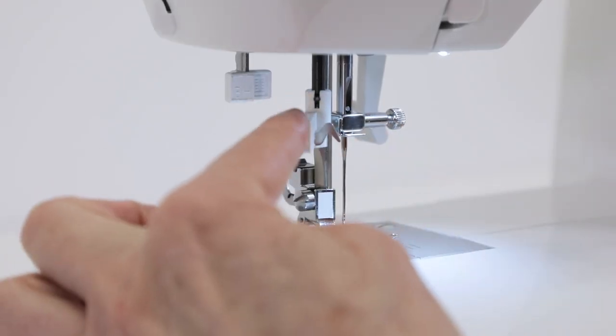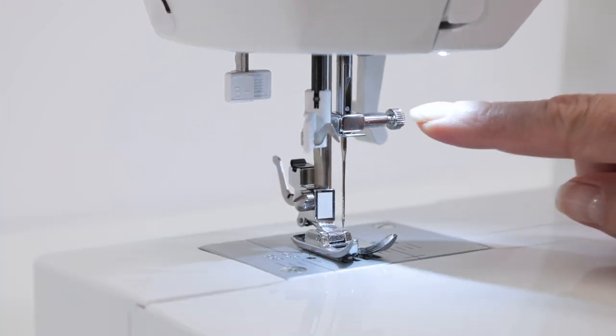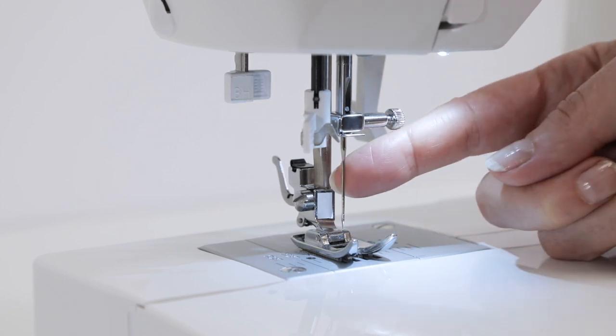This is your needle threader. Your buttonhole lever. This is your needle clamp screw and your needle clamp. It holds the needle in place.